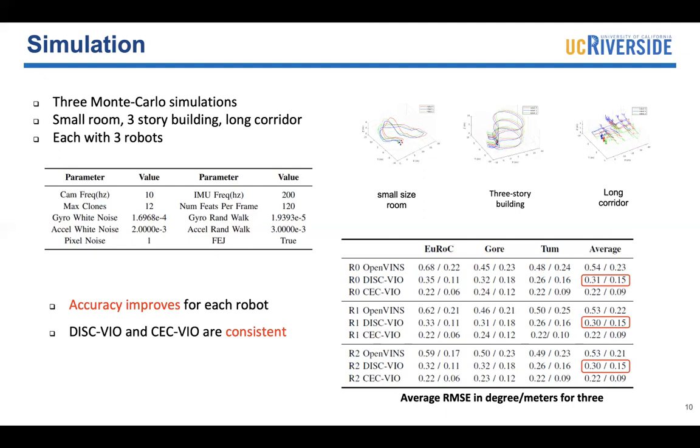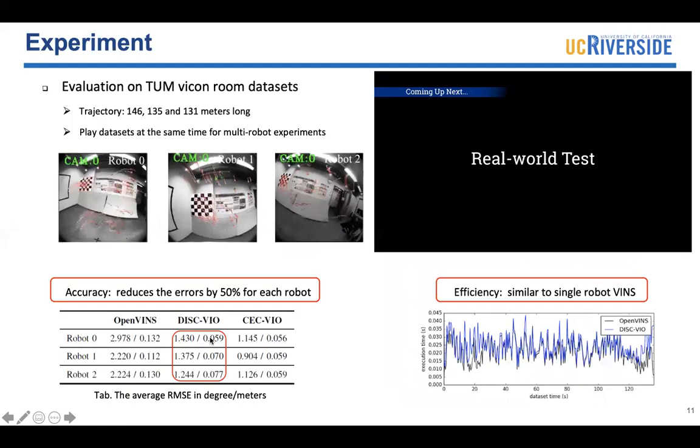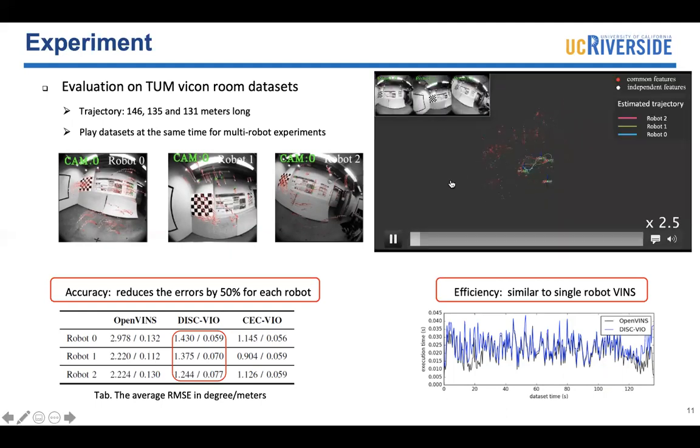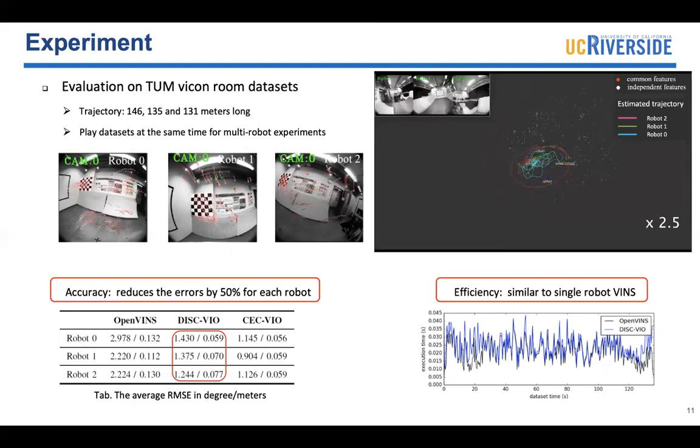And the DISC-VIO and the CEC-VIO are consistent. To further evaluate the performance, we use TUM dataset to create three robot scenarios. Since the datasets are collected in the same room, we can simultaneously read the ROS bags to mimic a three-robot cooperative case. In this video, you'll see three robots moving in the same room. The red points are the common features, and the white points are the independent features. Three robots only occasionally observe the common features.